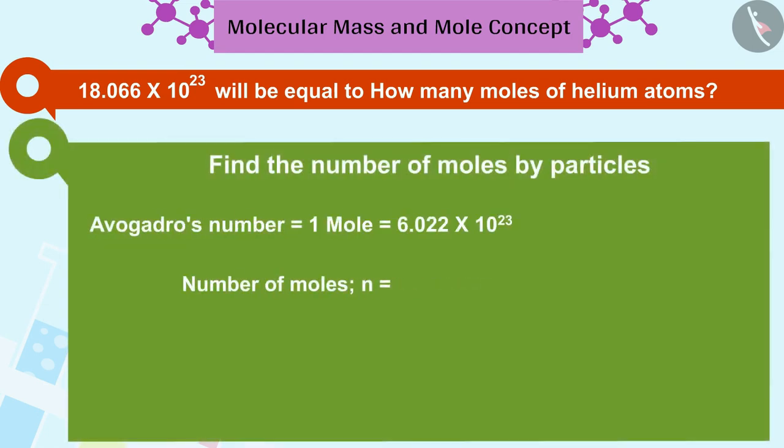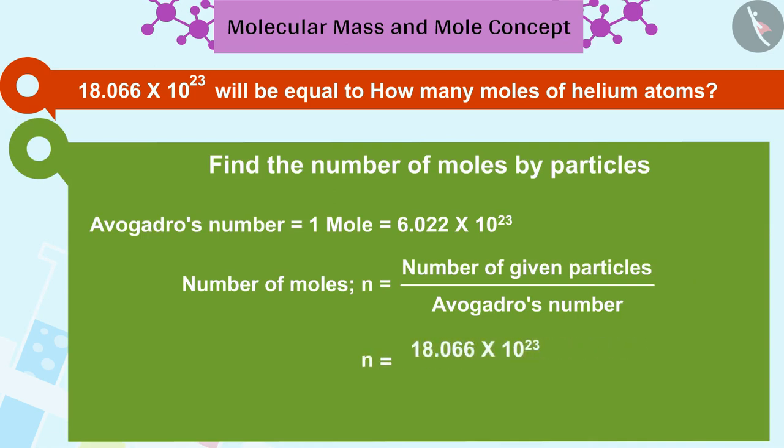To find the number of moles, we divide the number of given particles by Avogadro's number. In this way, 18.066 into 10 raised to 23 helium particles are equal to 3 moles.